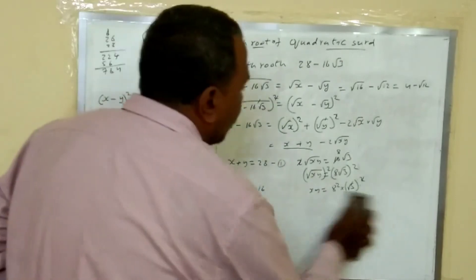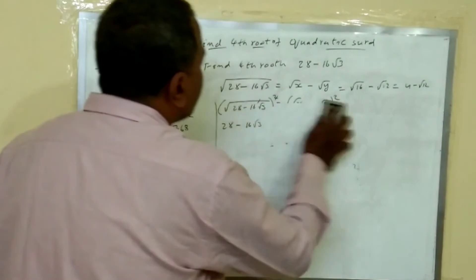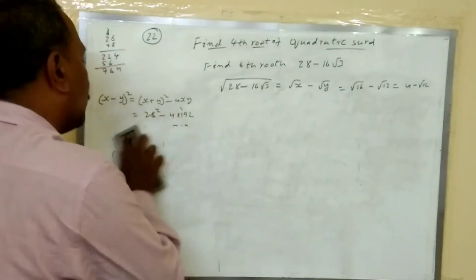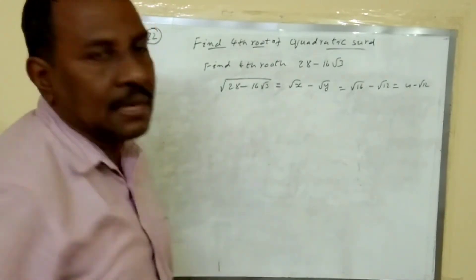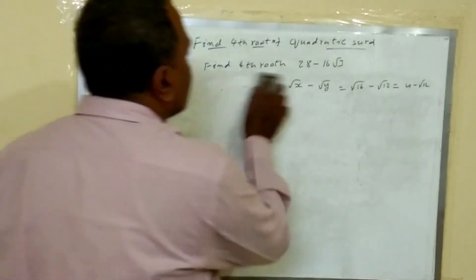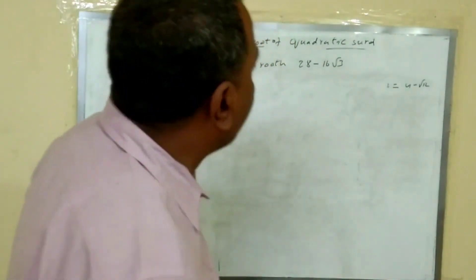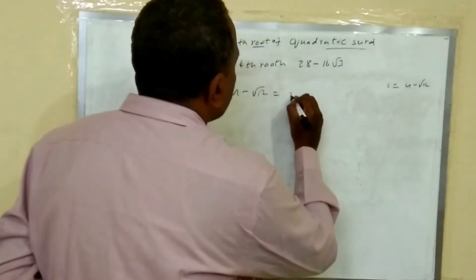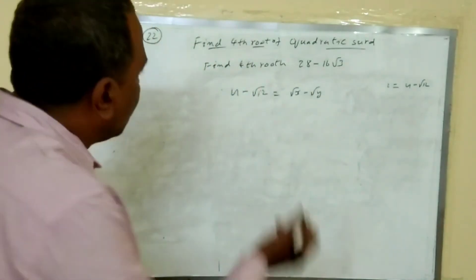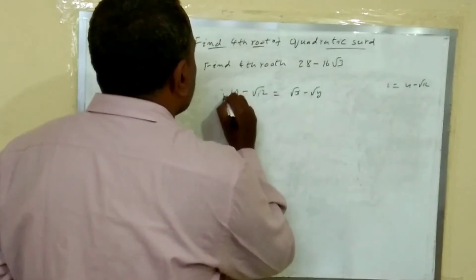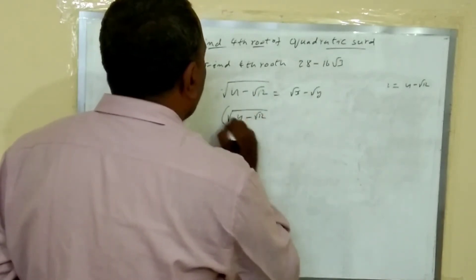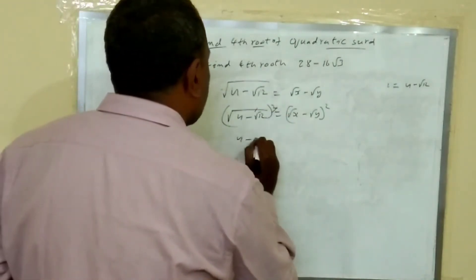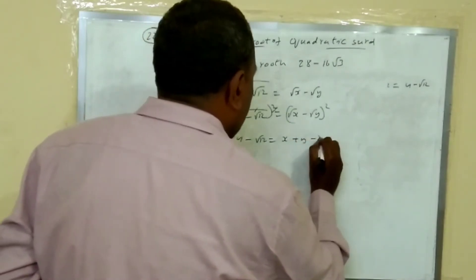We have found only the square root, but we need to find the fourth root. For the fourth root, we need to find the square root of this result, 4 minus root 12, once again. So take the square root of 4 minus root 12 and assume it equals root x minus root y. Squaring on both sides: 4 minus root 12 equals x plus y minus 2 root xy.